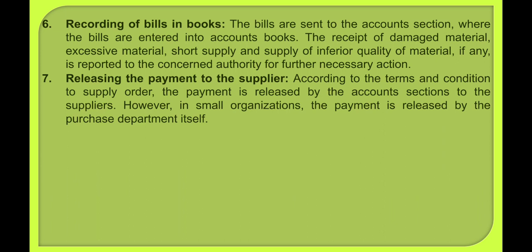The next step is recording the bill in the book. The bills are sent to the accounts section where they are entered into the account book. Receipt of damaged material, excessive material, short supply, or supply of inferior quality material, if any, is reported to the concerned authority for further necessary action. You have to inform the concerned authority if you have received damaged material, excessive material, or short supply.